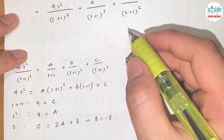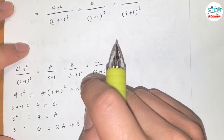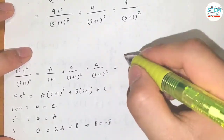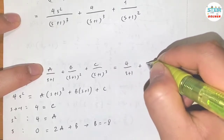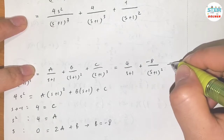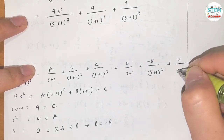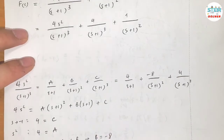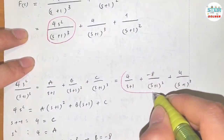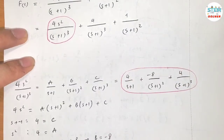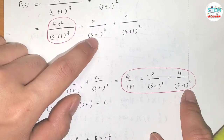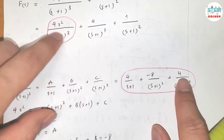Now that we know A, B, and C, plugging back in: 4 over (s plus 1) minus 8 over (s plus 1) squared plus 4 over (s plus 1) cubed. Adding the 4 over (s plus 1) cubed from the partial fractions to the other 4 over (s plus 1) cubed gives 8 over (s plus 1) cubed.